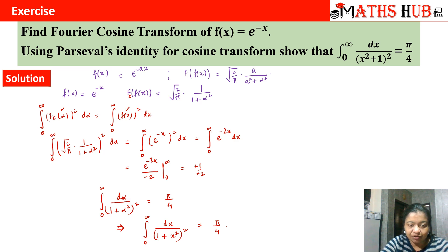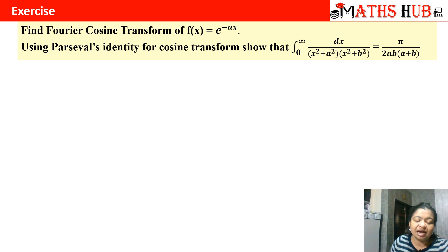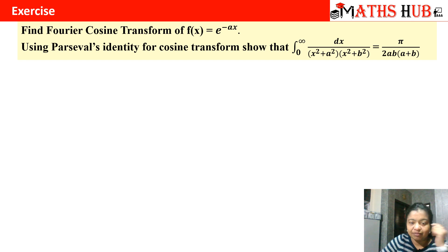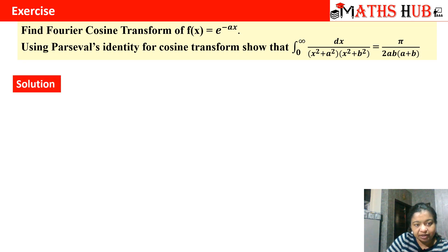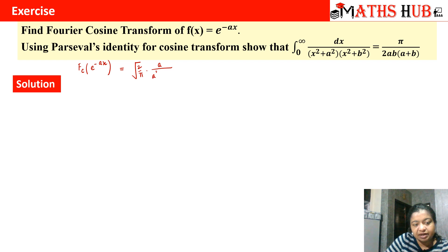Now let's move to another question on Parseval's identity. We apply the Fourier cosine transform to f(x) = e^(−ax) and use Parseval's identity for cosine transform to show a given integral. The Fourier cosine transform of e^(−ax) is √(2/π) · a/(a² + α²). Now we apply Parseval's identity. In this integral, there is no square term — there are two different terms. So we use the first formula: the integral from 0 to infinity of f_c(α) g_c(α) dα equals the integral from 0 to infinity of f(x) g(x) dx.